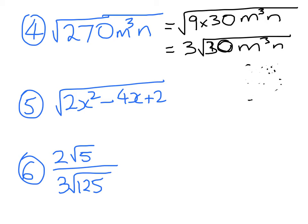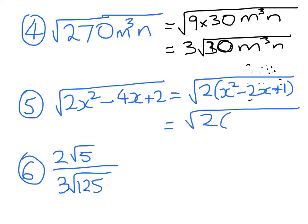This next one, it's got some algebra in it. So what we're going to look to do is first take out the common factor, which is 2 times x squared minus 2x plus 1. So the 2's going to keep on sitting under there. So what I've got here is 2 times x minus 1 squared. So that gives me root 2 times x minus 1.